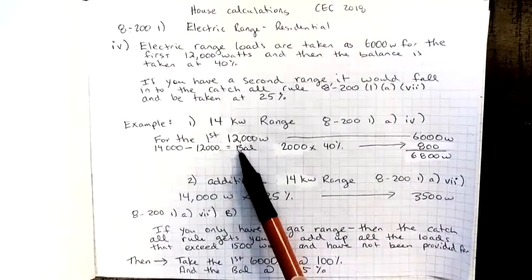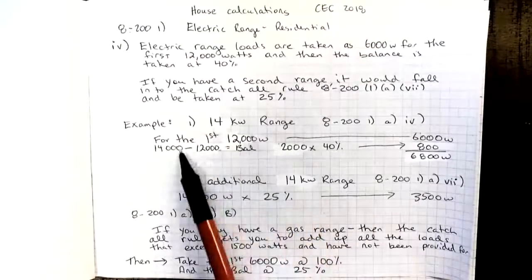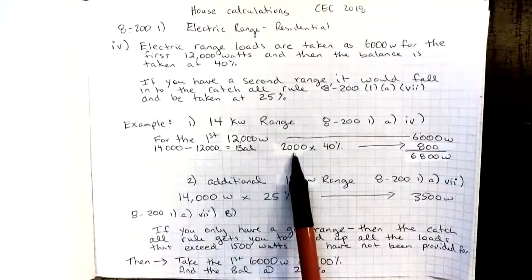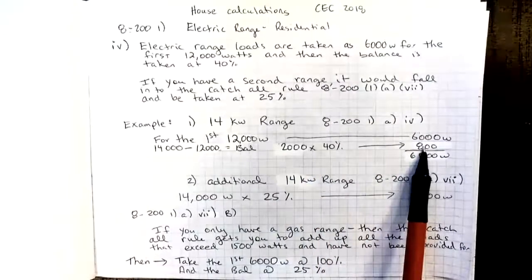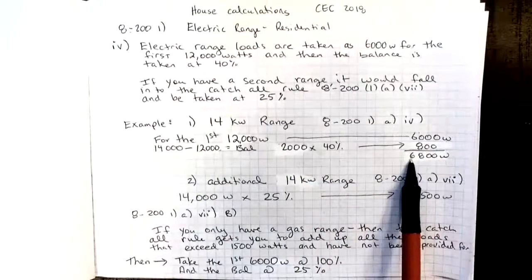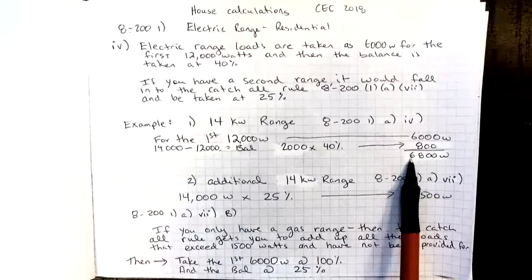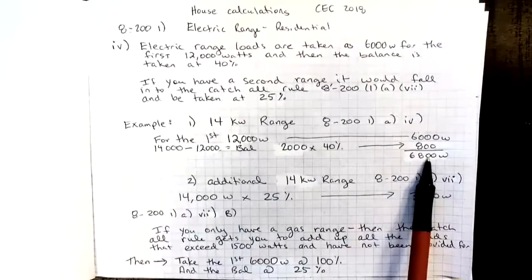Then the remaining, or the balance, is 14,000 minus the 12,000, gives us 2,000 left over. We apply that at 40%. And so our total demand factor towards the service for the first range would be 6,800 watts.